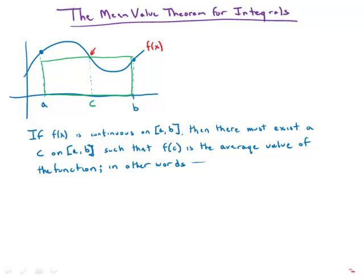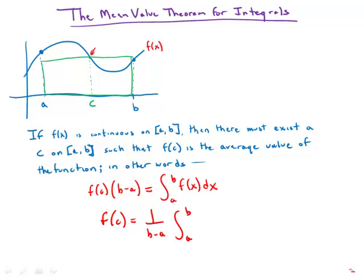In other words, the area of the rectangle, and that would be f of c times the base, which is b minus a, equals the area under the function on that interval, integral from a to b of f of x dx. So in other words, f of c equals 1 over b minus a times the integral from a to b of f of x dx.